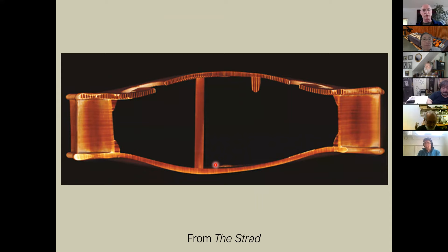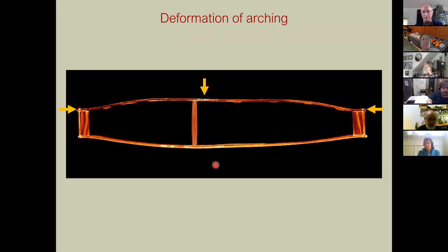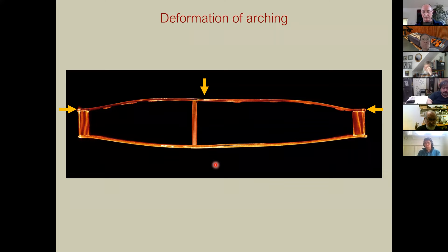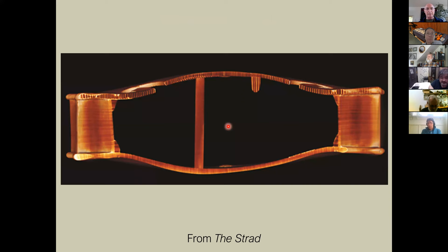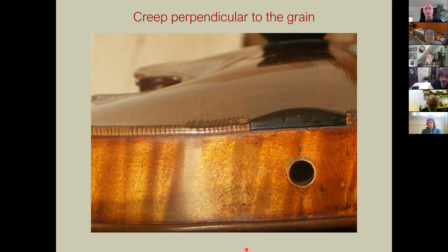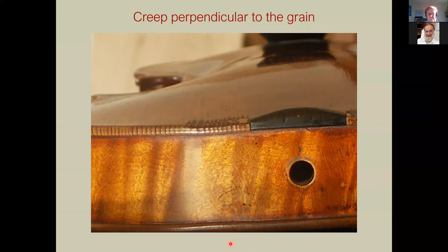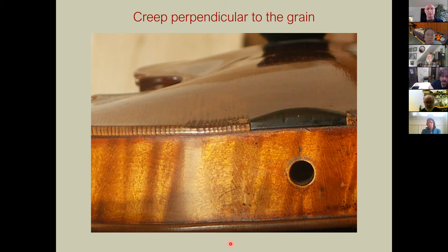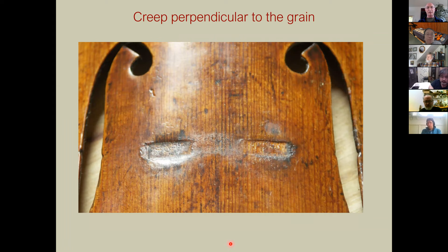From the inside we can see the sound post preventing the bridge force from going down as much on one side, creating a rocking effect over the sound post. Less obvious is creep parallel to the grain — for example, the crushing of wood from chin rest clamps, which can happen slowly and inevitably. The same applies to bridge feet, and when bridges warp, the wood is being compressed perpendicular to the grain on one side and stretched on the other.